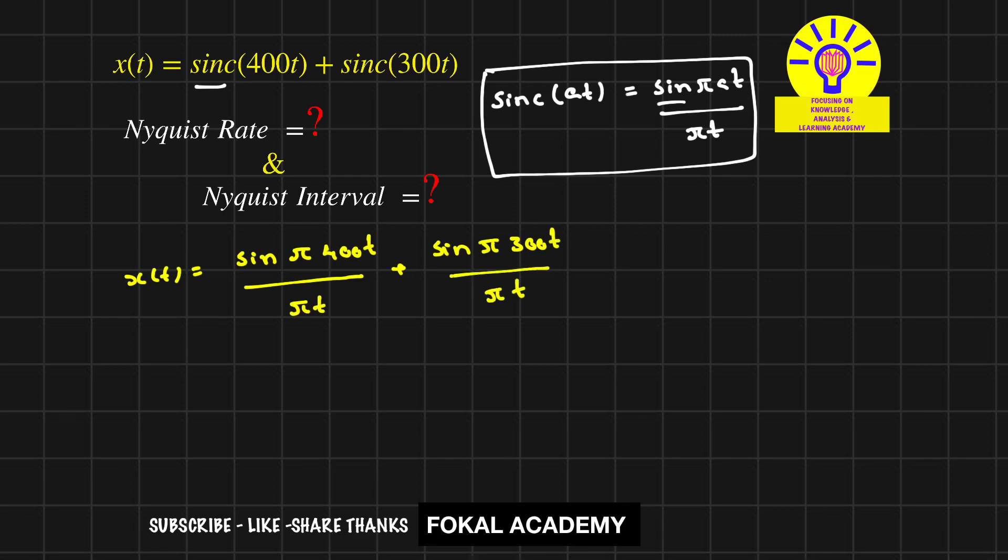In these two terms, we have 1/(πt) common. Factoring it out, we get x(t) = (1/πt)[sin(π·400t) + sin(π·300t)].